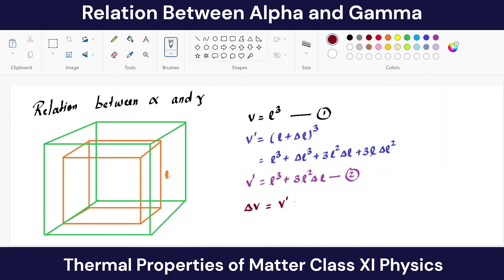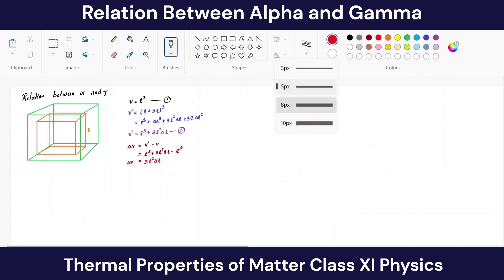The change in volume ΔV equals the new volume minus the previous volume: (L³ + 3L²ΔL) − L³. The L³ terms cancel, and we are left with ΔV = 3L²ΔL. This is our change in volume.